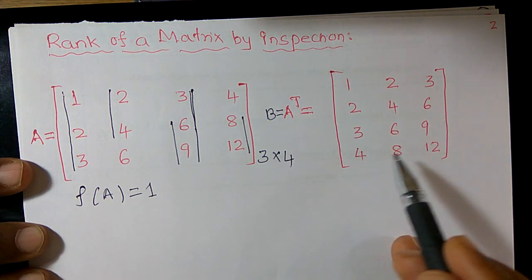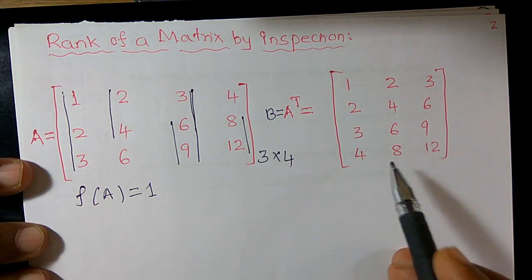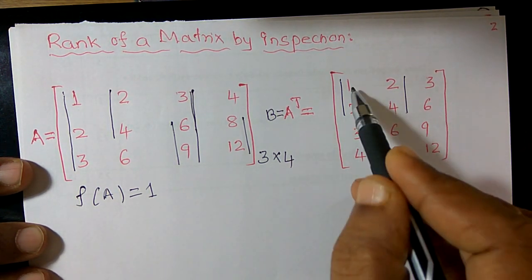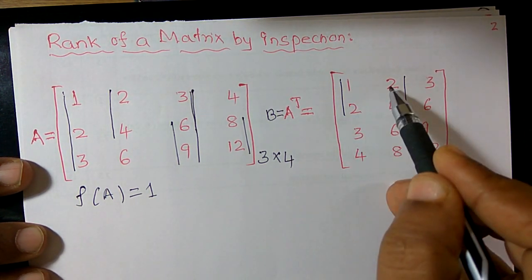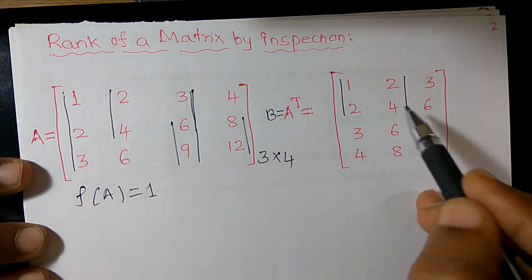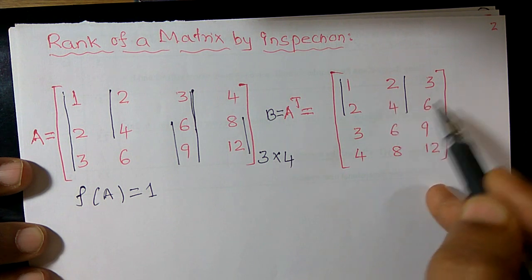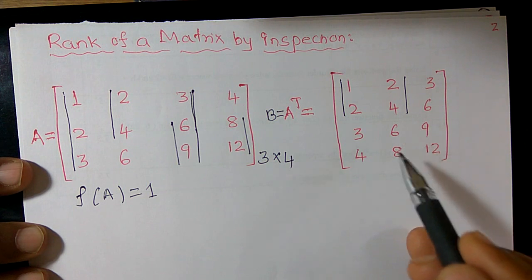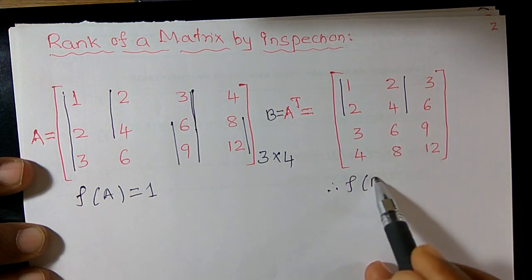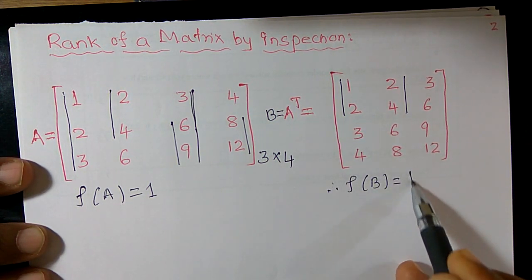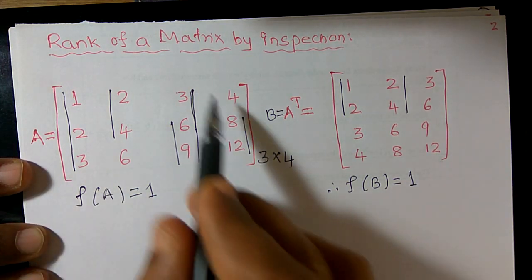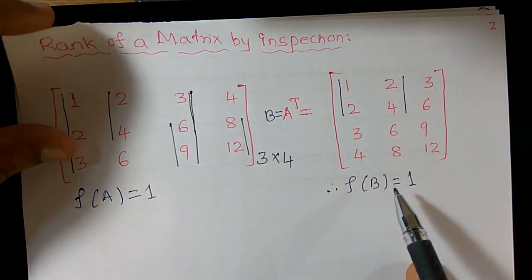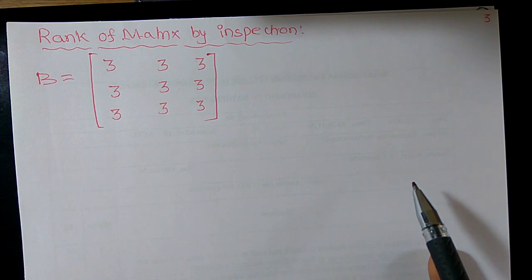All possible minors of order 3 are equal to 0, and all possible minors of order 2 are also equal to 0. For example, 1×4 = 4, 2×2 = 4, so 4 minus 4 = 0; 2×6 = 12, 4×3 = 12, so 12 minus 12 = 0. Therefore rank of B is also equal to 1, confirming rank of A equals rank of its transpose.